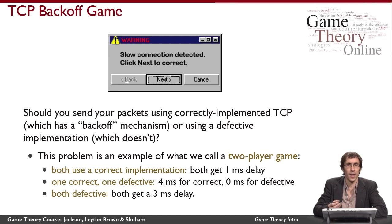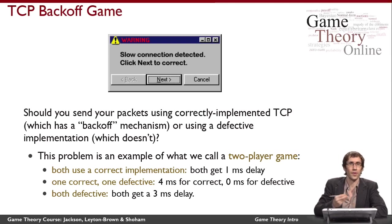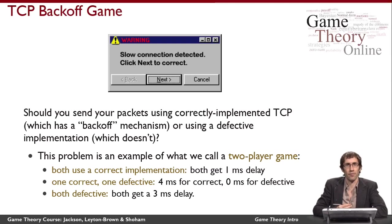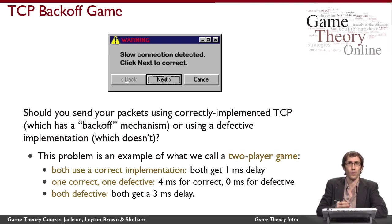In the two-player case, we need to say what happens in order to analyze this. Let's say that when both players use correct implementations, they both experience a delay of one millisecond. If one person uses a correct implementation and the other uses a defective one, the person with the defective implementation floods the network, causing the other person to back off heavily — experiencing a much longer delay — while the defective user gets their packets through virtually immediately. If both people use defective implementations, they're again in a symmetric situation, but both experience a bigger delay than before, because there's now a greater chance that their packets will be lost at every stage.